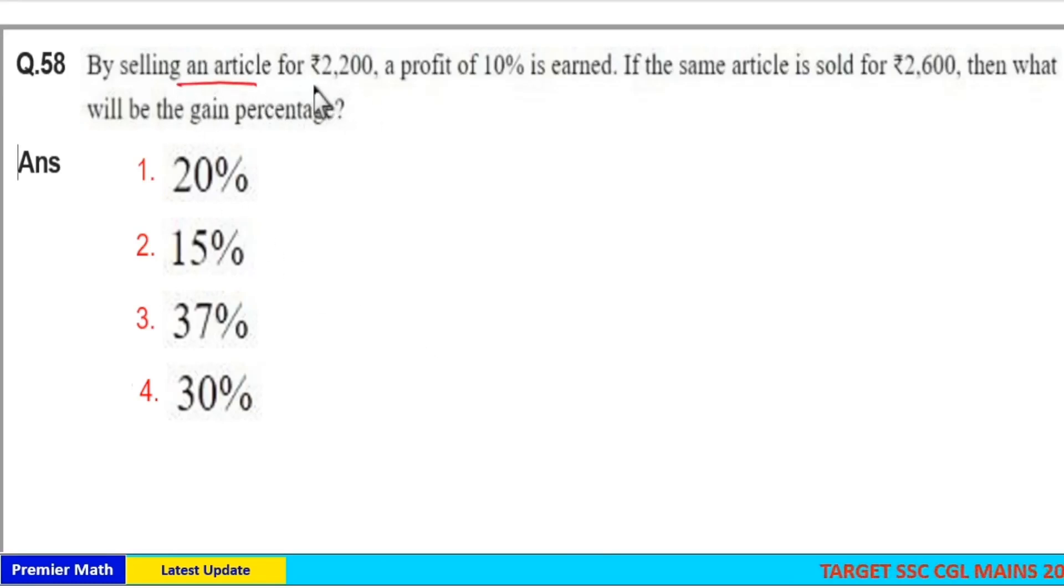By selling an article for rupees 2200, a profit of 10 percentage is earned. If the same article is sold for rupees 2600, then what will be the gain percentage? Here, profit means plus 10 percentage, which means 10 by 100.